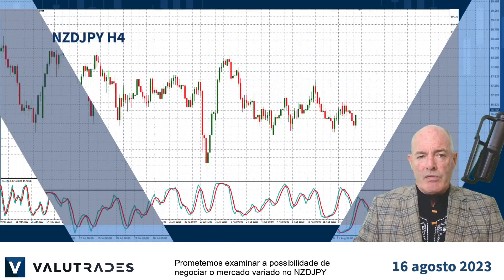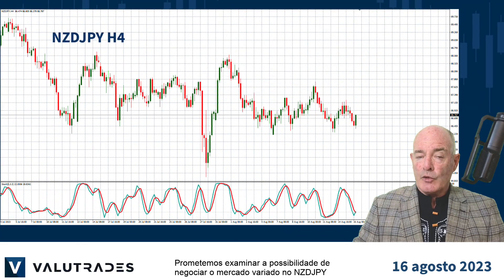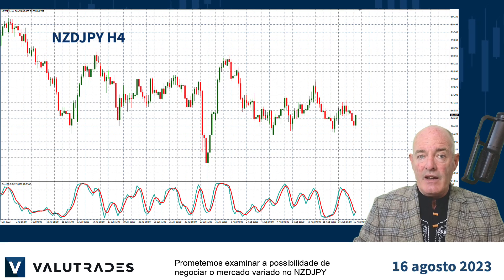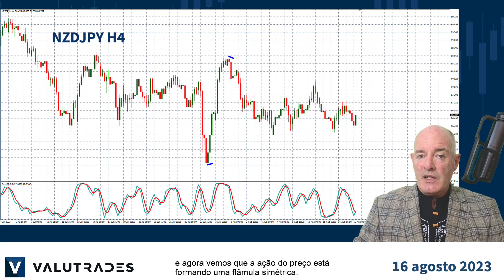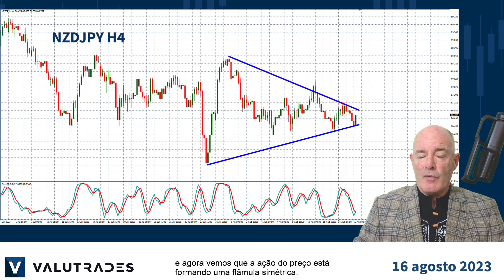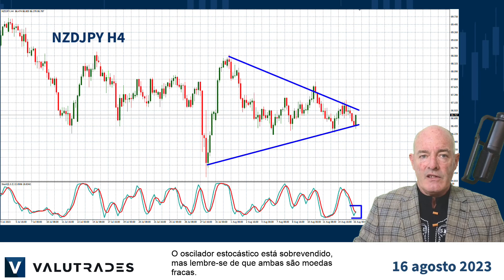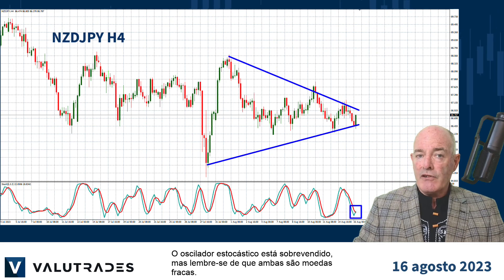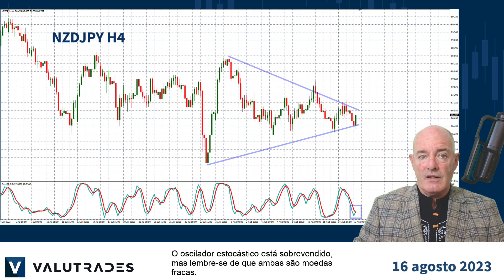We promised to look at the possibility of trading a ranging market on kiwi yen, and we now see that price action is forming a symmetrical pennant. The stochastic oscillator is oversold, but please remember that these are both weak currencies.